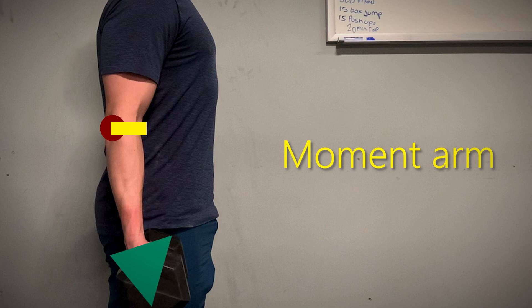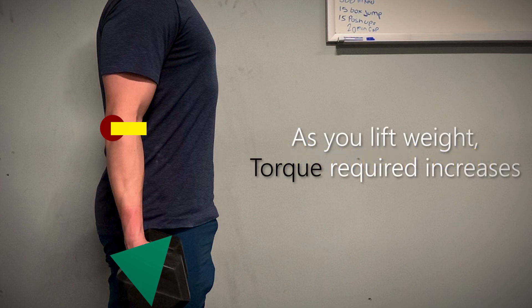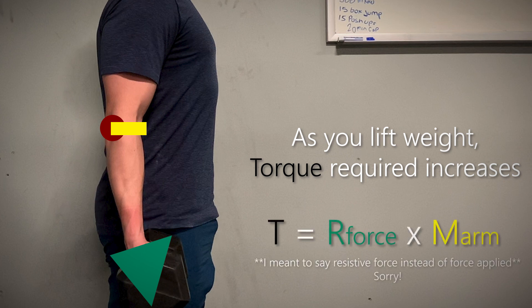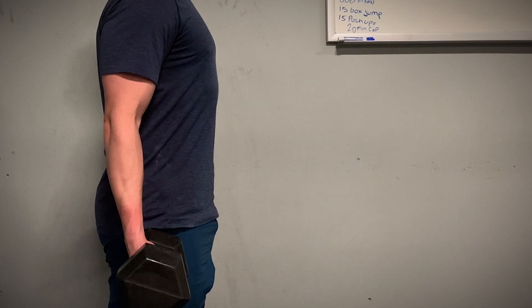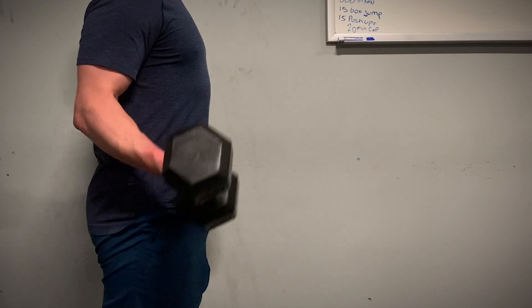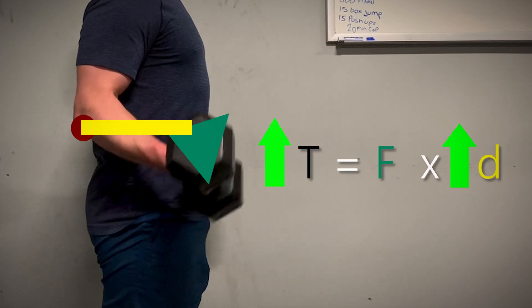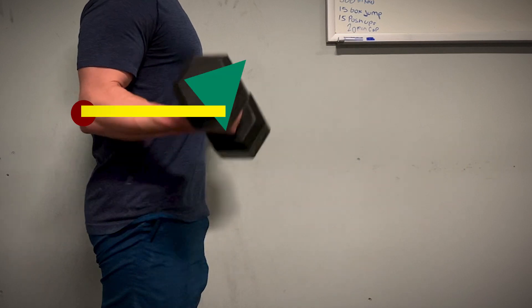During the early stages of the bicep curl, the amount of torque required to lift the weight by your bicep increases. This is because torque is the product of the force applied and the length of the moment arm. Even though the force of the dumbbell and the length of the lever arm have not changed, the length of your moment arm has increased — therefore the torque required to continue lifting the weight will increase as well.